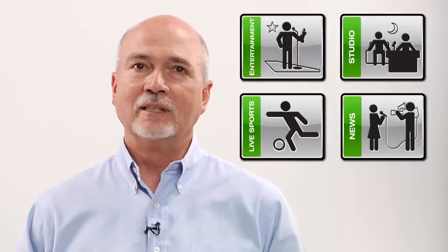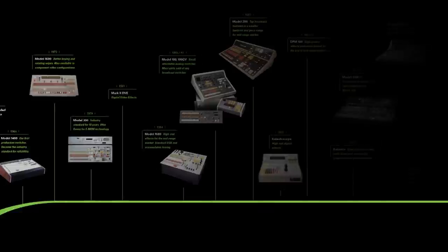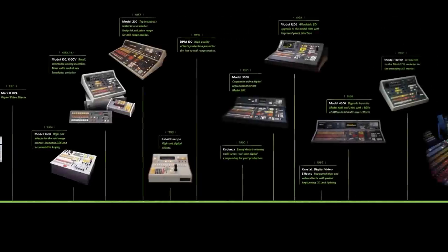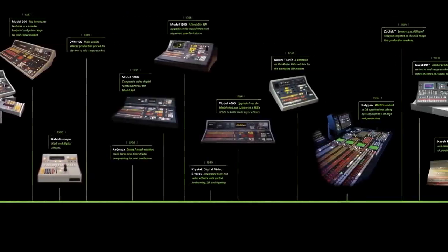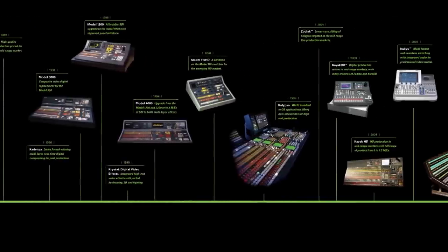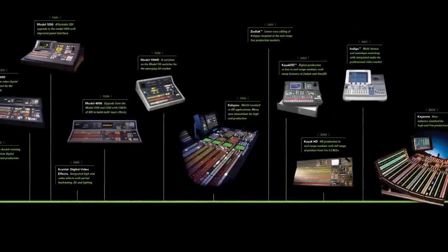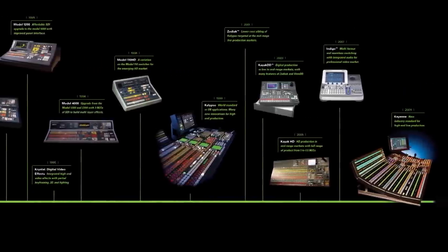Wow, she's been busy. Cayenne has evolved from all the popular Grass switcher families — the 1600, 200, 300, 4000, XtendDD, Calypso, and Kayak.